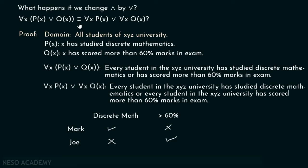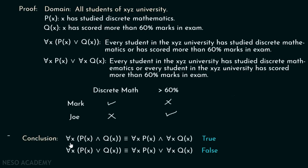If any implication is not satisfied, then equivalence is not satisfied. The conclusion is: for all x P(x) ∧ Q(x) is equivalent to for all x P(x) and for all x Q(x), but for all x P(x) ∨ Q(x) is NOT equivalent to for all x P(x) or for all x Q(x). You cannot replace AND by OR and claim equivalence.